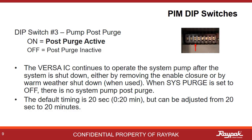PIM dip switch number three controls the post purge option. Post purge allows the pumps and cold water protection system, if equipped, to run for a bit after the burner shuts off. This extra 20 seconds of pump run time gets the residual heat out of the combustion area so you do not trip on a high limit accidentally. The default time is just 20 seconds, but it can be adjusted from 20 seconds to 20 minutes.